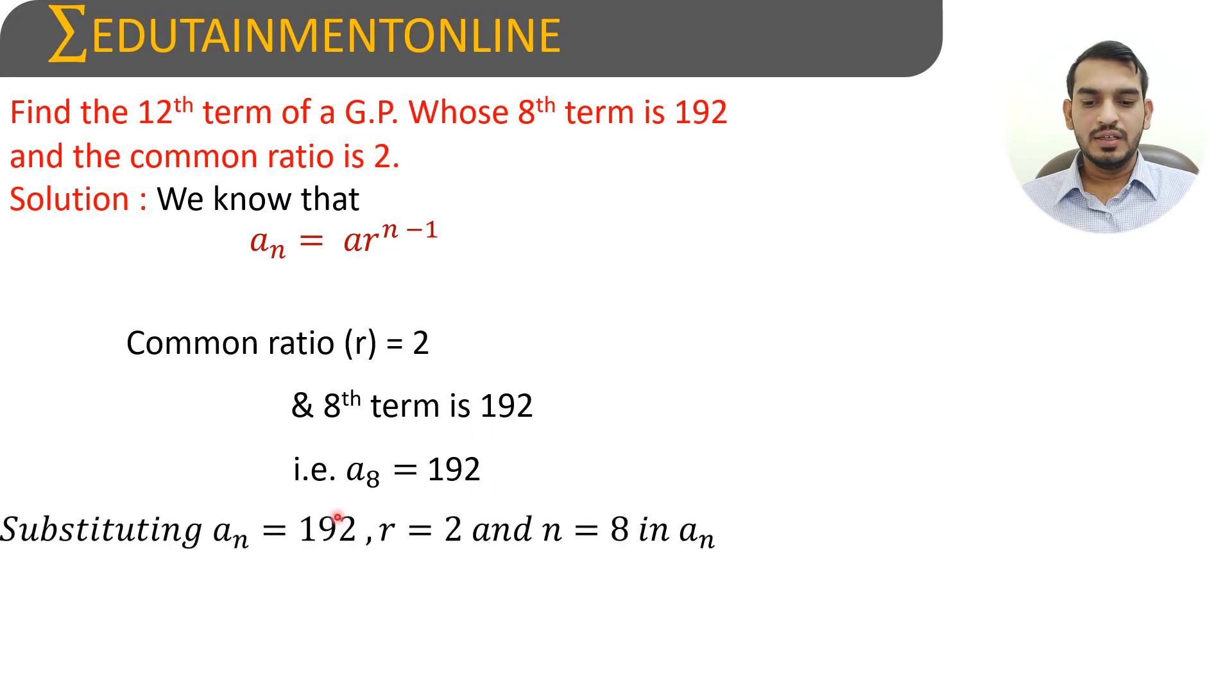So substituting the value of nth term which is 192, r equals 2 and n equals 8 in a_n, considering that n equals 8. So 192 equals a into 2 power 8 minus 1. So 192 equals a into 2 power 7.